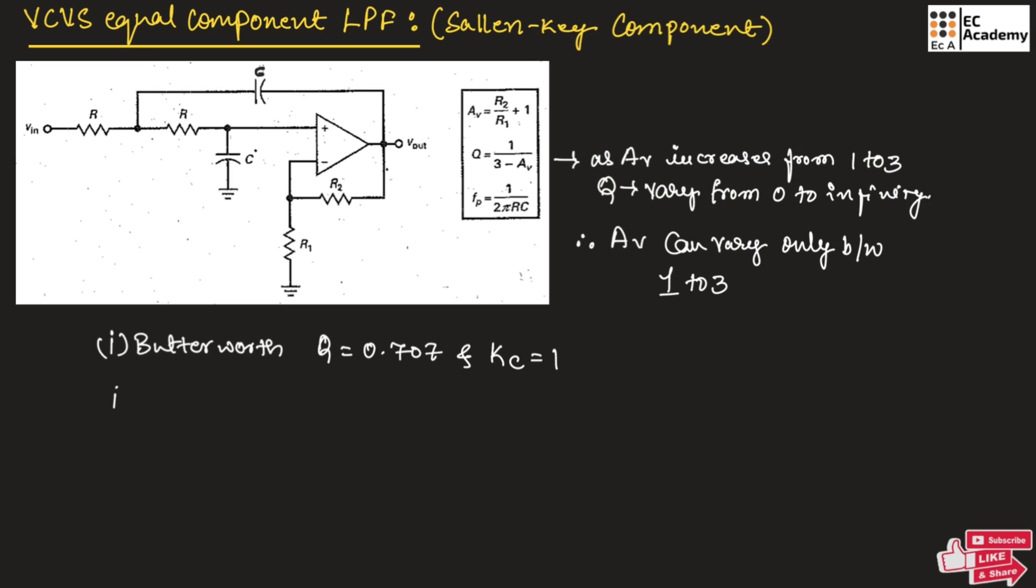And for Bessel filter, Q should be equal to 0.577 and Kc will be equal to 0.786.